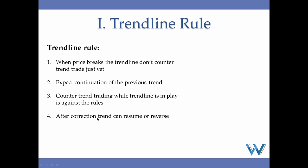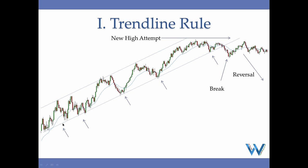After correction, the trend can resume or reverse. Meaning after there's a break of a channel, a new extreme forms, and there is a correction phase — if the bias is strong enough there can be a larger pattern and the trend may resume. Or after that correction, a new trend may start in the opposite direction and the trend may reverse.